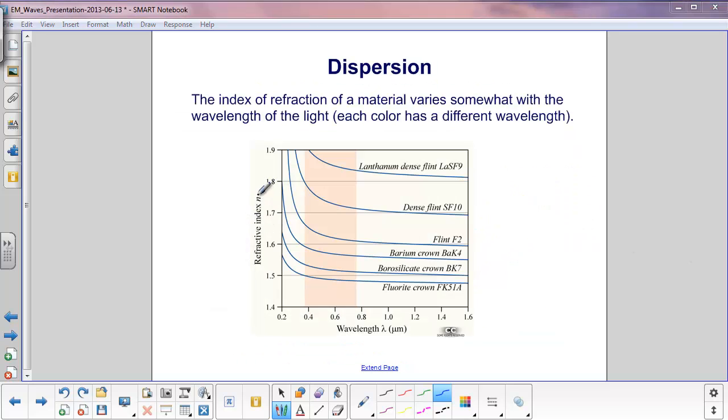Here's a chart that shows the refractive index, or N, versus the wavelength of incident light in micrometers, for different substances. For example, here's fluoride crown glass, borosilicate crown glass, etc. Different types of glass.